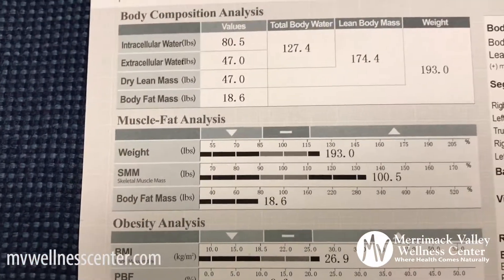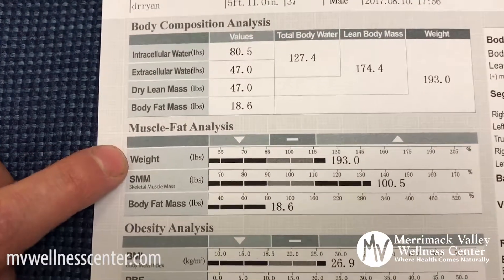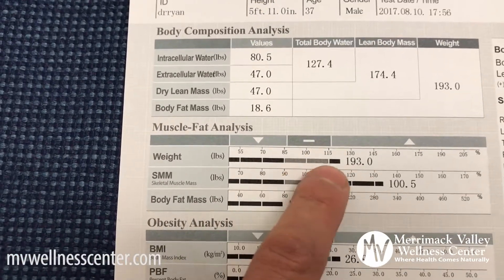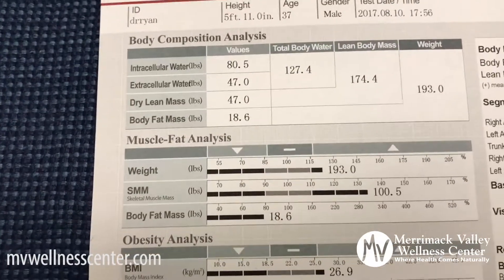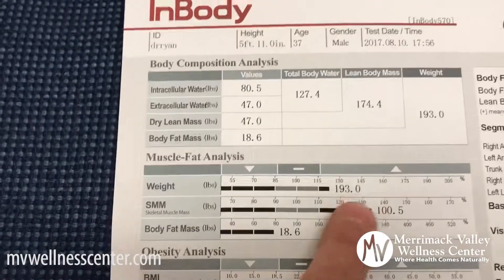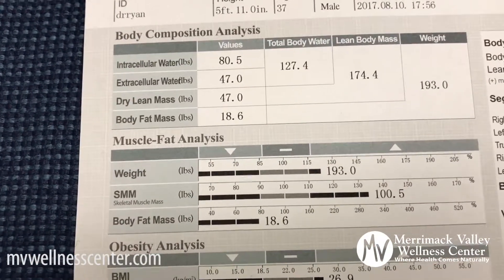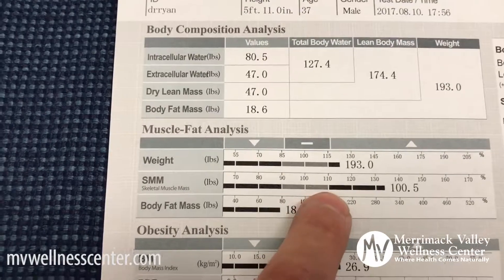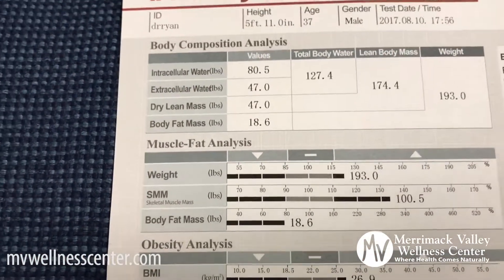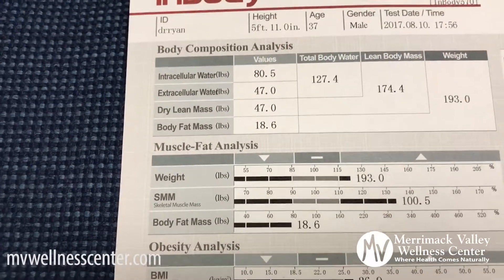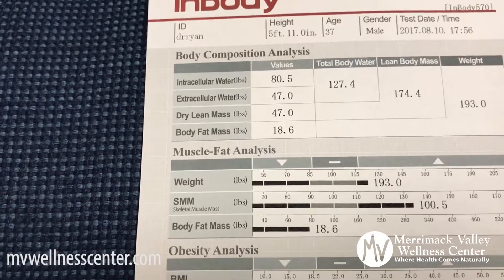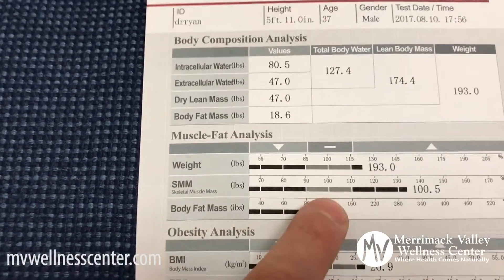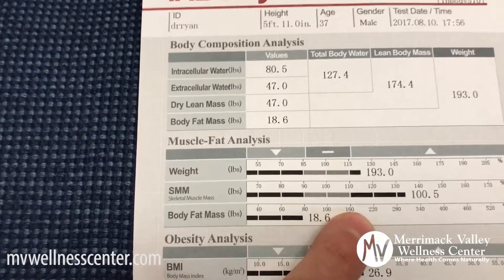Underneath there's a muscle-fat analysis breakdown showing my total weight. It shows a percentage — ideally you want to be between 85 and 115 percent of an ideal body weight for someone of similar height and age. I'm a little above that because I exercise a lot and carry more muscle mass, as you can see from my skeletal muscle mass, which is well above 110 percent for a typical 37-year-old at 5'11". Skeletal muscle mass ideally should be between 90 to 110 percent, and body fat between 80 to 100 percent.